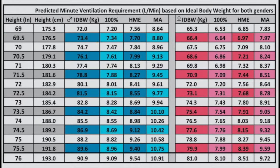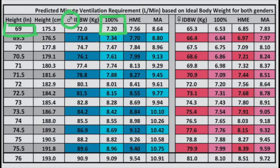Now let's look at the table of predicted minute ventilation requirements based on ideal body weight for both genders. Looking at the male portion of the table, we can find that 7.2 liters per minute corresponds to a height of 69 inches. So 7.2 liters is the 100% minute ventilation requirement for a male that is 69 inches tall.